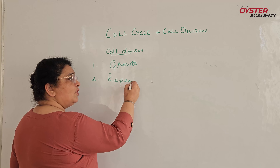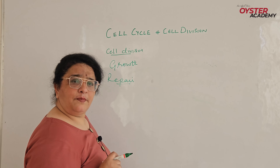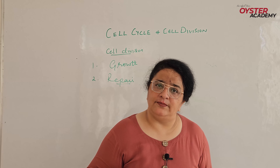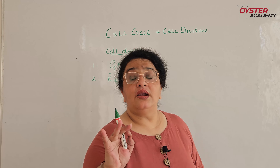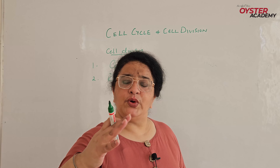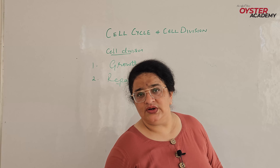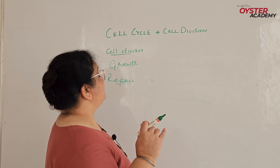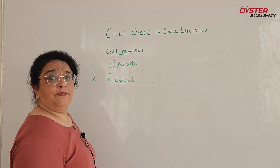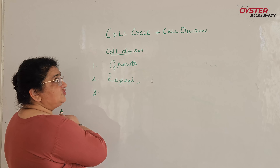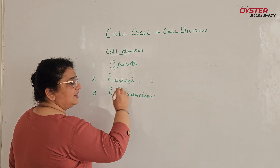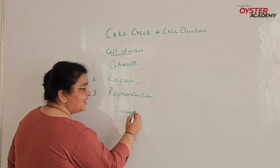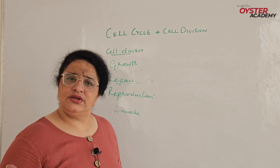Hello everyone. Today we will do a new topic: cell division and cell cycle. The first question is what is cell division? Sexually reproducing organisms or multicellular organisms start their life with a single cell called a zygote. One single cell starts, and with this zygote, multicellular organisms develop by cell division. So when a single cell divides into two daughter cells, this is what cell division is.